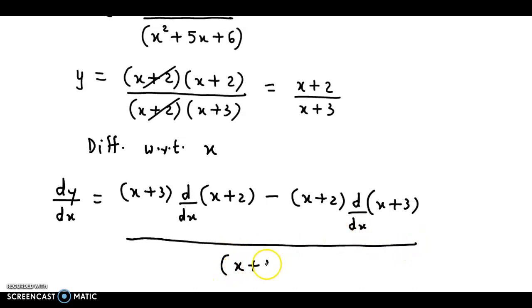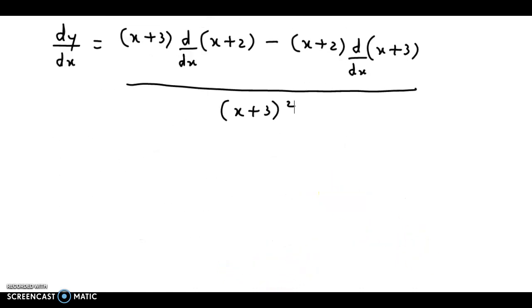Now we further simplify. So this bracket as it is, that is (x+3) times... Now here we have two terms to differentiate. The derivative of x is 1 and the derivative of 2 is 0. So the overall derivative will be 1.